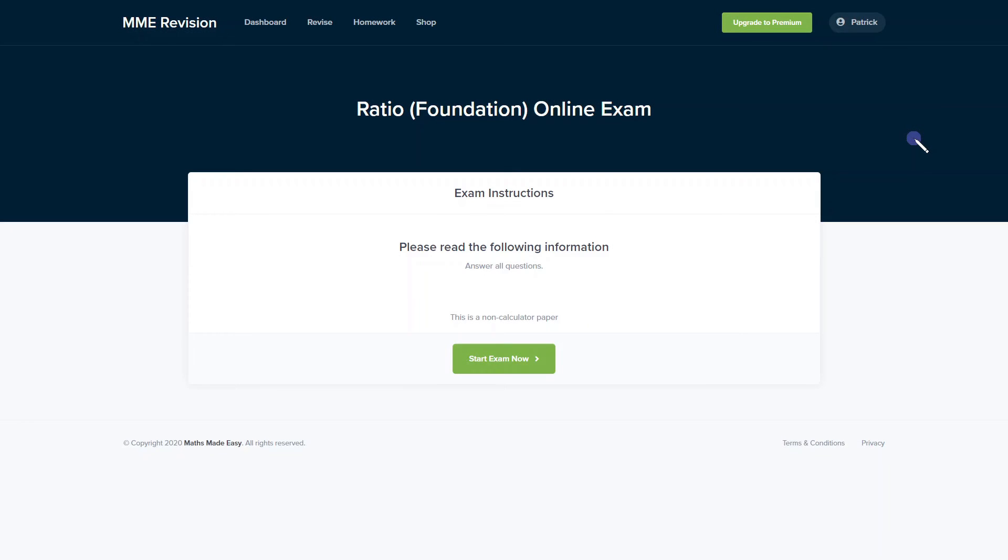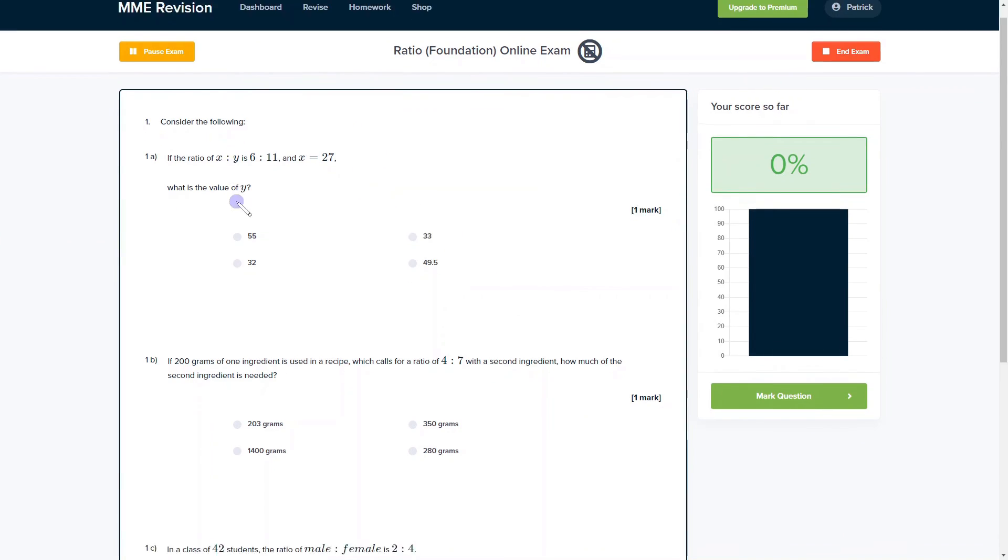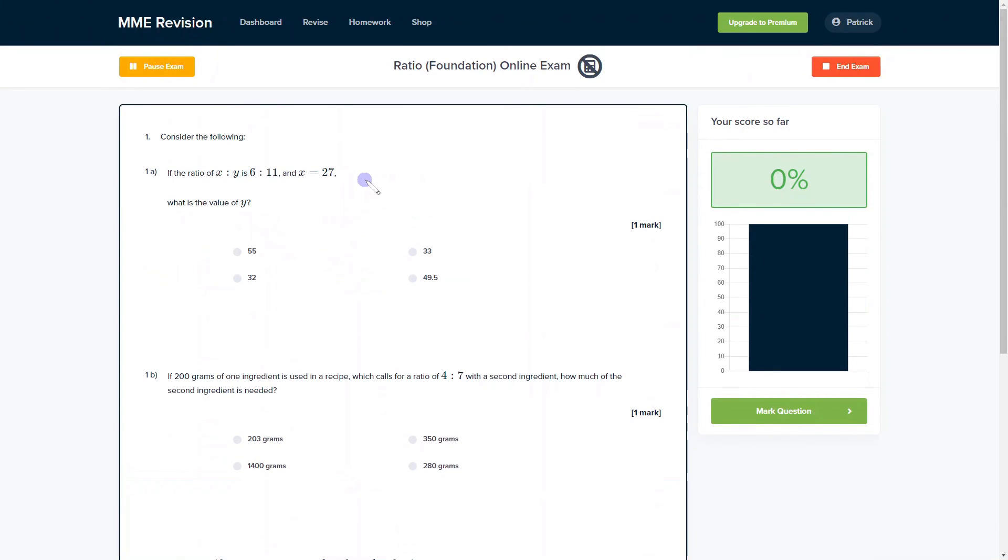Understanding ratios is a really important skill for your exam, so if you want to get some practice, you can have a go at our online exam. It's available through our revision platform, and you'll find loads of different questions with instant feedback. This will allow you to keep track of areas you're weakest at and where you need to improve. If you're interested, click the link below.